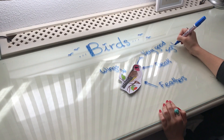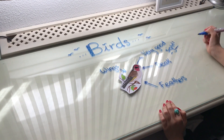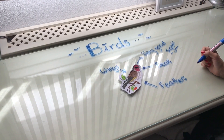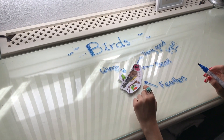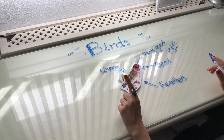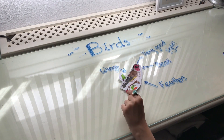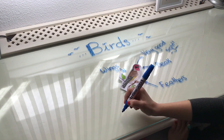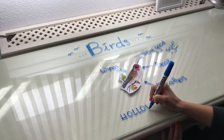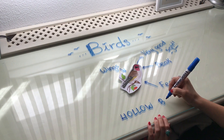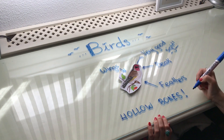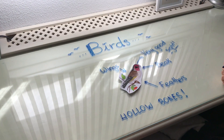They can see very far away and very well. Birds can fly not only because they have wings and feathers — there is also a very important characteristic: birds have hollow bones. I want you to investigate what hollow bones are.